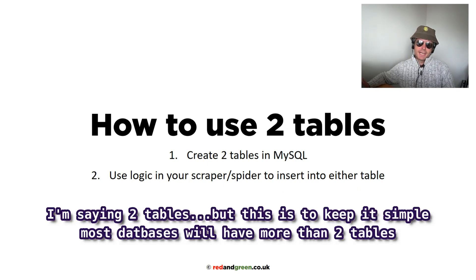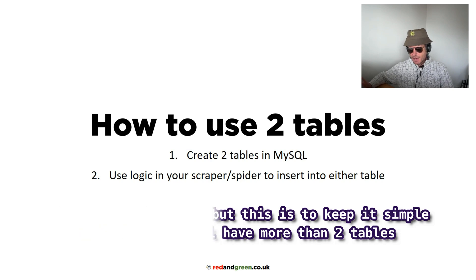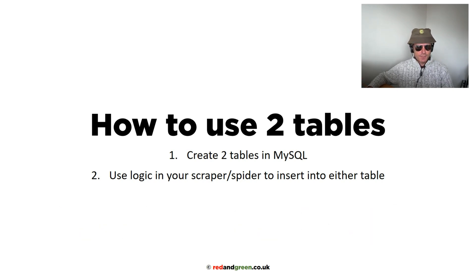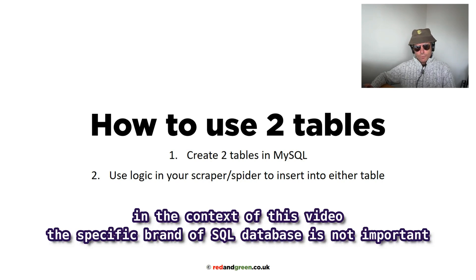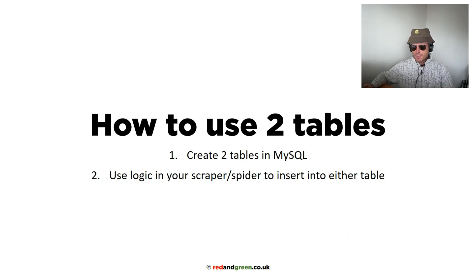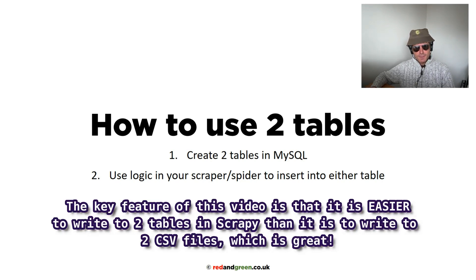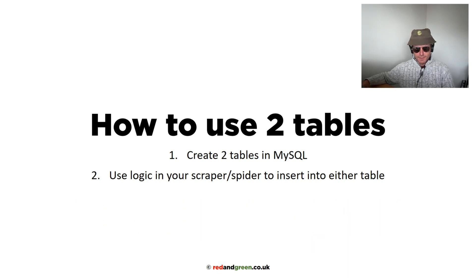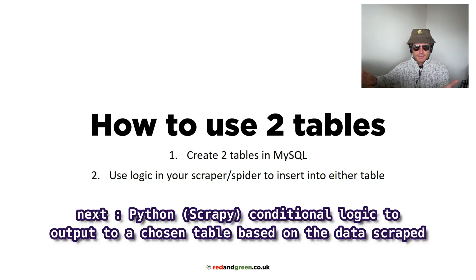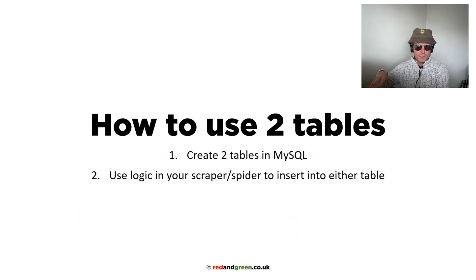We create two tables in our database. Here I'm using MySQL, which is now also named MariaDB. We need to write some logic in Python, in our scraper, our spider, within Scrapy, to insert the output from Scrapy into either one table or the other. For instance, if you were web scraping a bookshop, you may want to store all of your fiction in one table and all of your non-fiction in another. You may have to keep your data separate so that you can add additional fields into one table and not the other — many, many reasons.